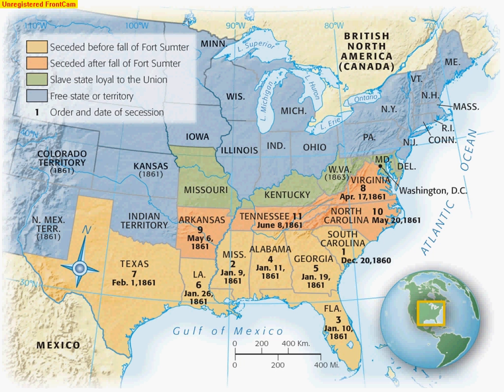Here you see where each of the states are — blue is obviously the free states, down in the south is the Confederacy, and the green are the border states.